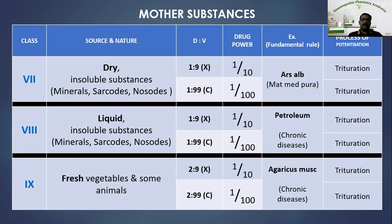In summary: classes one to four are for mother tinctures; classes five and six (with subclasses A and B) are for mother solutions; and classes seven, eight, and nine are for mother substances. Altogether, there are nine classes in the old classical Hahnemannian method.